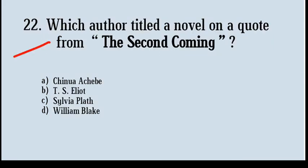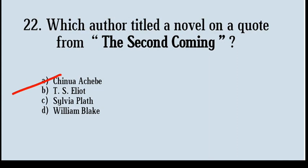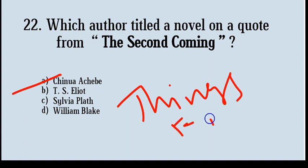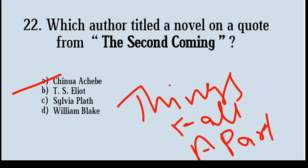Which author titled a novel on a quote from 'The Second Coming'? Options: Chinua Achebe, T.S. Eliot, Sylvia Plath, William Blake. Correct answer: option number A, Chinua Achebe. 'Things Fall Apart', written by Chinua Achebe, an African writer, takes its title from a quote from 'The Second Coming'.